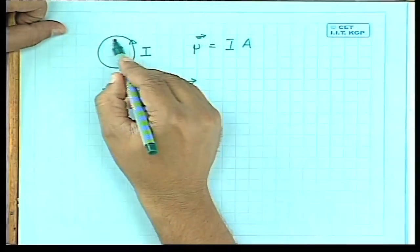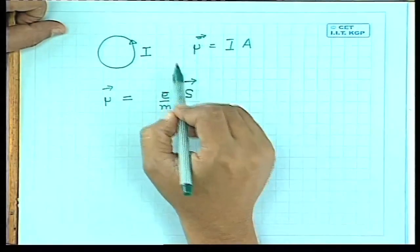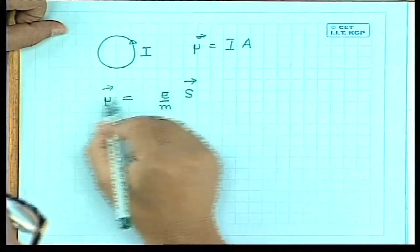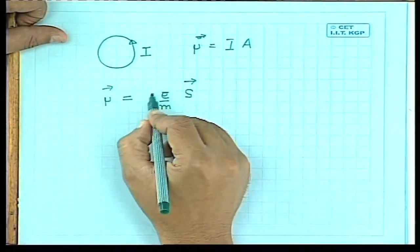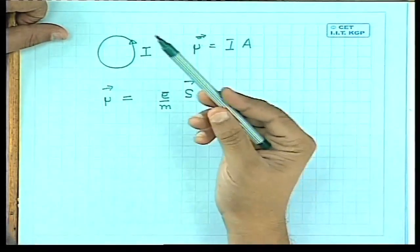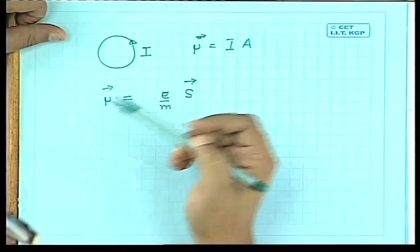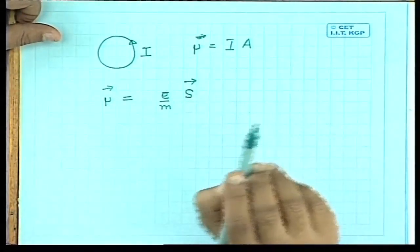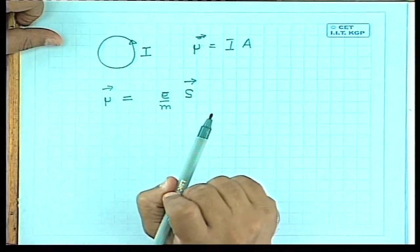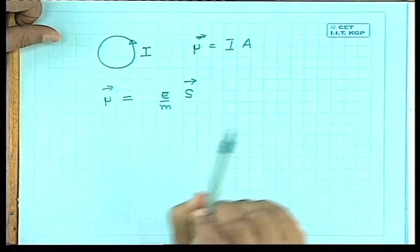So if the electron has some intrinsic angular momentum s, it will also have a magnetic moment which is e by m times s. This is clear from our classical understanding of electromagnetism. If there is a set of charged particles going around, they will have a magnetic moment and angular momentum, related by this gyromagnetic ratio. So if the electron has some intrinsic angular momentum — the spin — then it will also have a magnetic moment, which is going to be the magnetic moment of the silver atom.